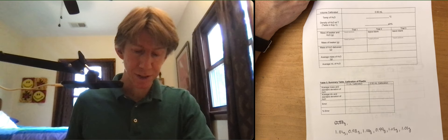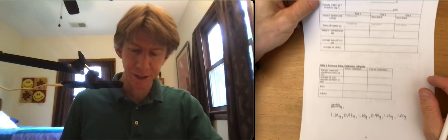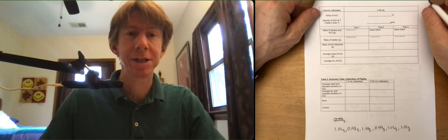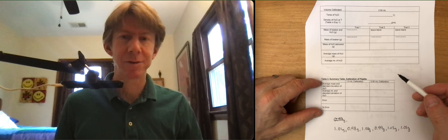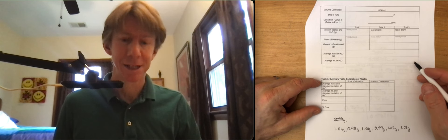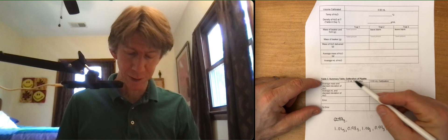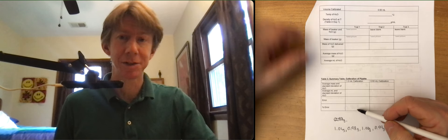Now for table number three which is your summary table for the calibration of the pipette. You'll have to make a summary table for the calibration of the graduated cylinder and of course it will look very similar to this except it will just say graduated cylinder here and you'll do all of these calculations.